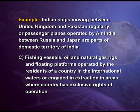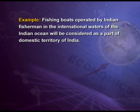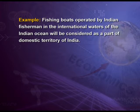The third item included in domestic territory is fishing vessels, oil and natural gas rigs, and floating platforms operated by the residents of a country in international waters or engaged in extraction in areas where the country has exclusive rights of operation. For example, fishing boats operated by Indian fishermen in the international waters of the Indian Ocean will be considered as part of the domestic territory of India.